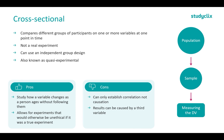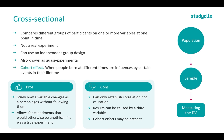We also have what we call cohort effects. This is when people born at different times are influenced by certain events in their lifetime. For example, millennials experienced the recession in 2008, whereas people born after 2008 never experienced that. That specific cohort of people is influenced by that one specific event.